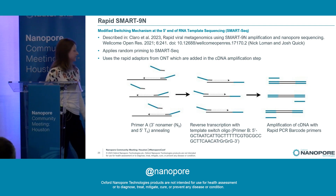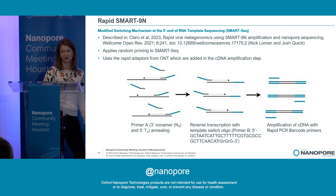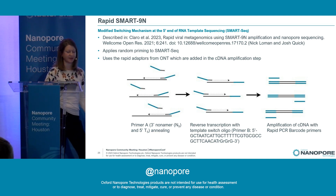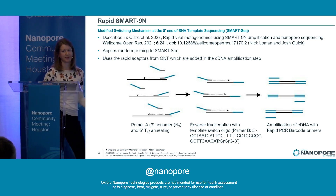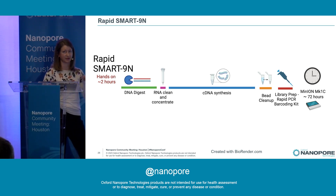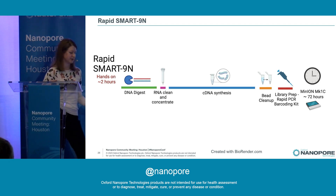Another method we've been using more recently is RapidSmart9n, described by Nick Lohman and Josh Quick's groups. It applies random priming to SmartSeq technology — similar to SISPA, it uses a primer with a random nanomer to bind any RNA in your sample and generates cDNA. But in the amplification step, we use the Rapid PCR barcoding kit, which actually adds the barcodes during amplification. It's been a big time saver. Although there are still long amplification runs on the thermocycler, during that time you can go back and prep a whole other set of samples.